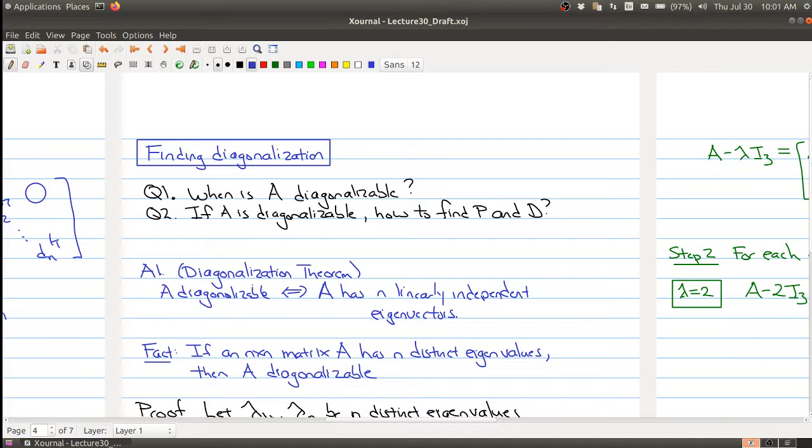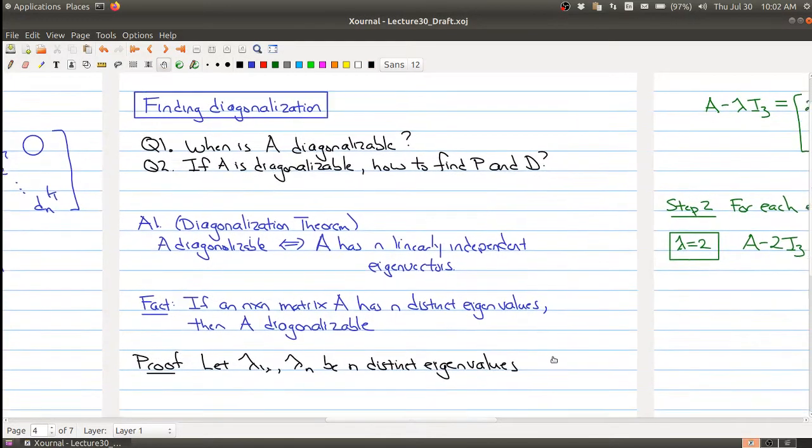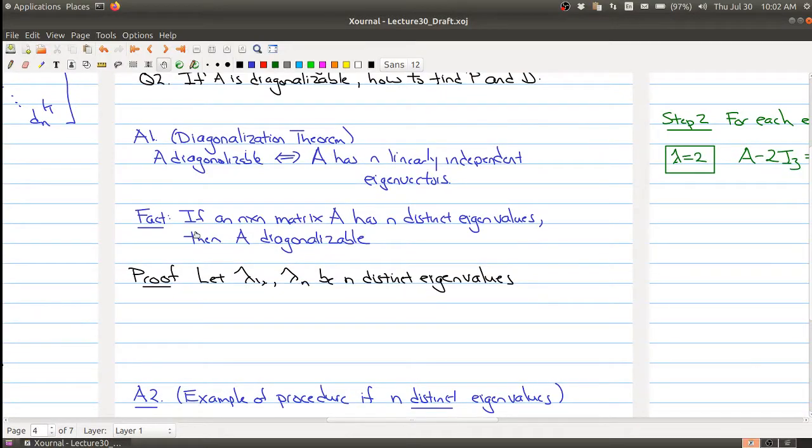Okay, now I won't prove that, but I will prove a special case of this. Namely, if you have an n by n matrix A with n distinct eigenvalues, then A is automatically diagonalizable.